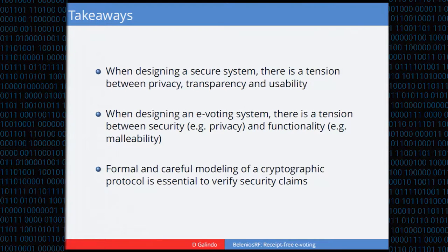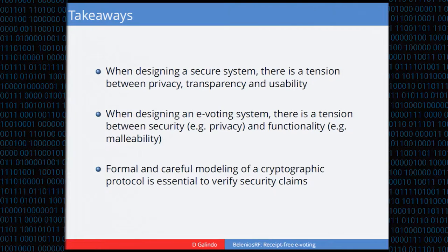I had to give this talk to our students in our group, so I prepared what I thought were the lessons I learned by doing this research. My takeaways are that when we design a secure system, there is a tension between privacy, transparency, and usability. In the case of electronic voting, transparency could be called security or integrity. Every time I try to propose something, I think about where I'm paying the price, because there is always a tension — if I have more usability, I probably have a bit less security.